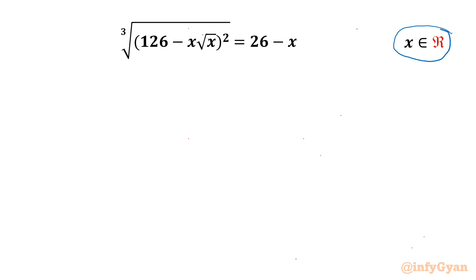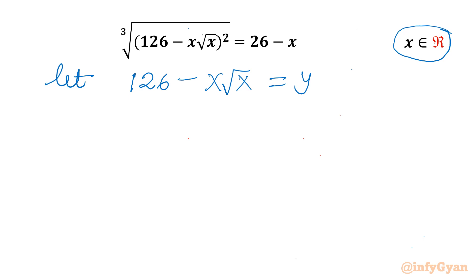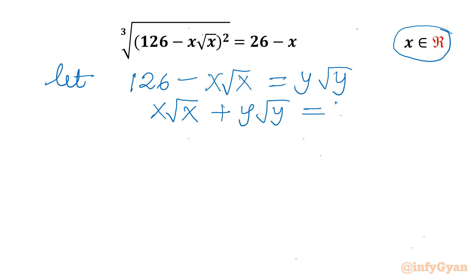Let us get started with our substitution: 126 minus x√x, let us say it is y√y. From this equation I can write x√x + y√y = 126, and I will call this equation 1.